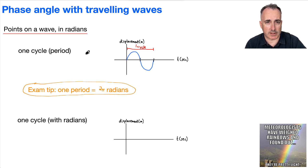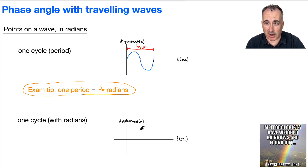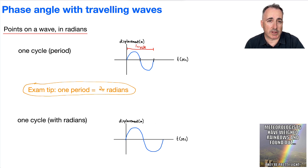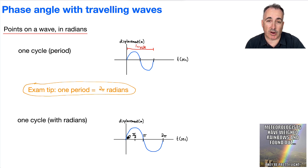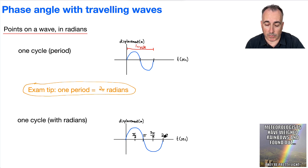Here's the sneaky part — depending on your math class, you may or may not have seen this. Let me draw a single cycle. Instead of labeling the end as just the whole period, I'm going to call it two pi, because that's one whole cycle. If that's two pi, then the midpoint must be pi. Half of that is pi over two. I can start counting by pi over two: one pi over two, two pi over two, three pi over two, four pi over two.